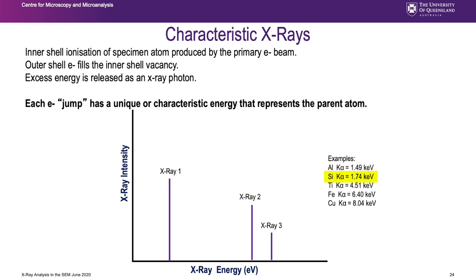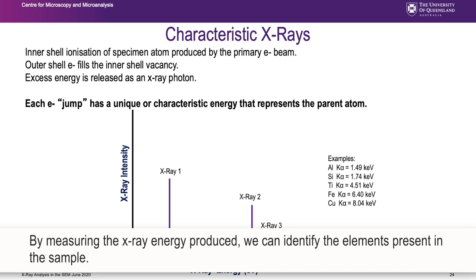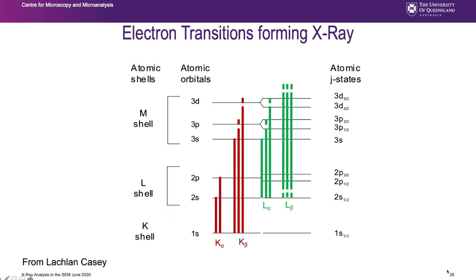For example: aluminium K-alpha is 1.49 keV, silicon K-alpha 1.74 keV, titanium K-alpha 4.5 keV, iron K-alpha 6.4 keV, copper K-alpha 8 keV. By measuring the X-ray energy produced we can identify the elements present. There are more than just one jump possible. A jump from the L shell to the K shell is K-alpha, from the M shell to the K shell is K-beta, from the M shell to the L shell is L-alpha. Jumps that are so close in energy are grouped together and appear as one line.